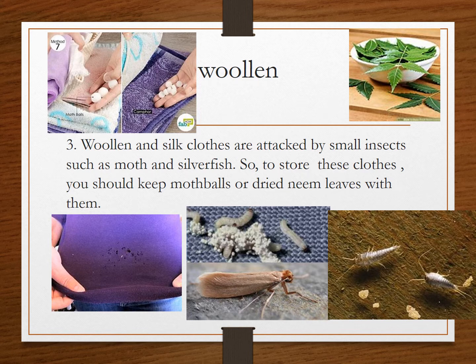Now let's talk about how to take care of your woolens. Woolens and silk are attacked by small insects such as moth and silverfish. Silverfish is not a fish — it is a wingless insect. You can see here how cloth is damaged with small holes that these insects have made. Now, how does a moth look? This is a moth here.